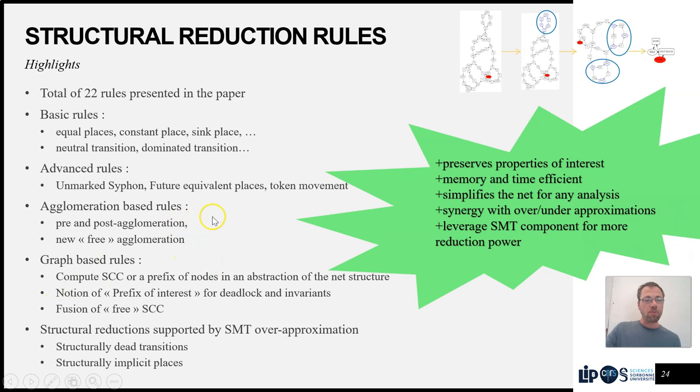Then we have all these agglomeration-based rules, so pre and post agglomeration, which are classical, and the new free agglomeration that we just saw, the graph-based rules I talked about earlier, and finally these rules supported by the SMT over-approximation.